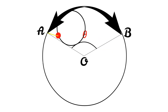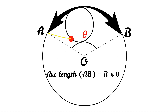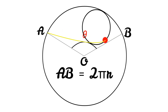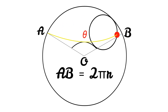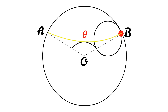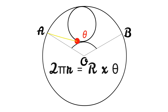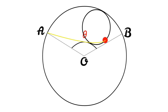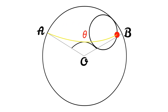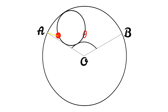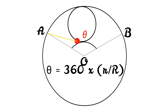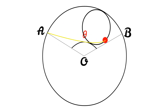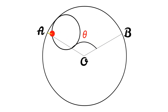Capital R is the directing circle radius. The formula is derived from the sector equation: arc length = radius × angle of sector. Here, AB = 2πr, since it is the distance covered by the generating circle in one rotation. So 2πr = R × θ, giving θ = 2π × (r / R). Converting from radians to degrees gives 360°, so θ = 360° × (r / R). This formula is mainly used in epicycloid and hypocycloid to determine the sector angle.